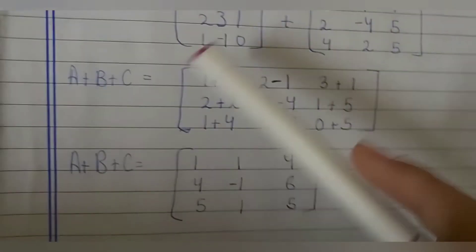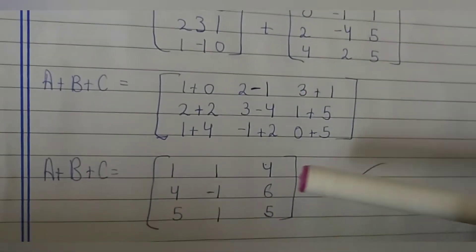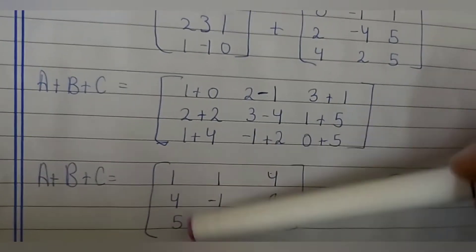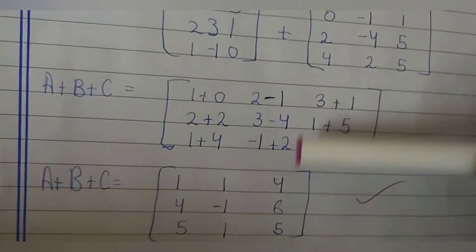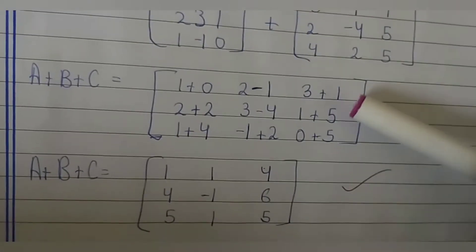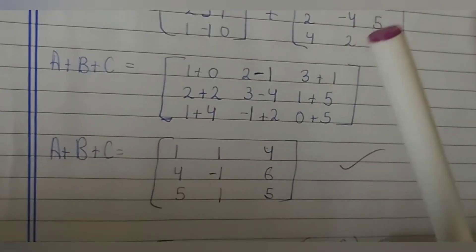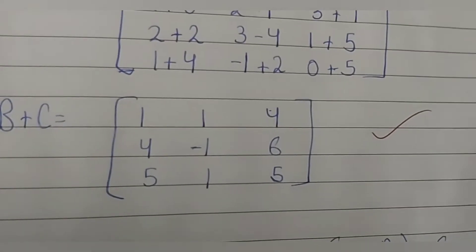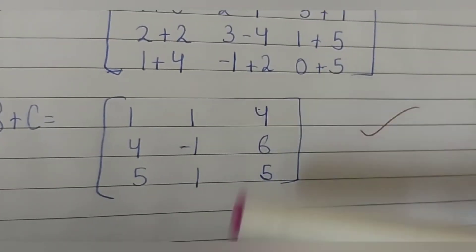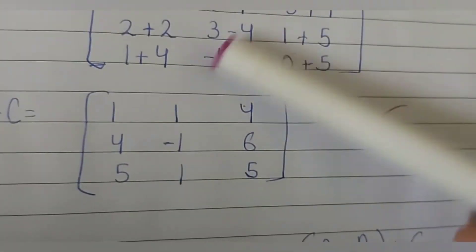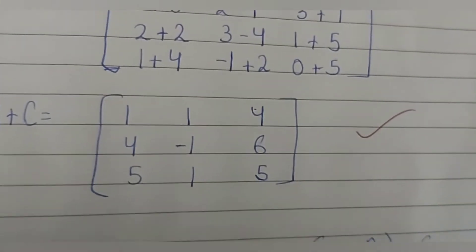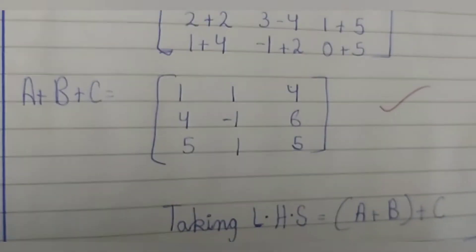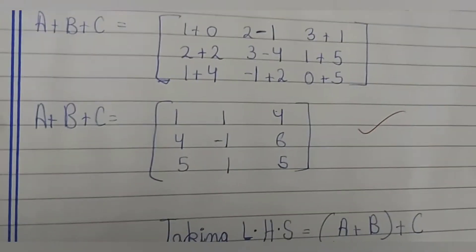So: 1 plus 0 is 1, 2 minus 1 is 2 — correction: 3 plus 1 is 4, 2 plus 2 is 4, 3 minus 4 is minus 1, minus 1 plus 5 is 6, 1 plus 4 is 5, minus 1 plus 1 plus positive value is 1, 0 plus 5 is 5. So the right hand side result is: 1, 1, 4, 4, minus 1, 6, 5, 1, 5.